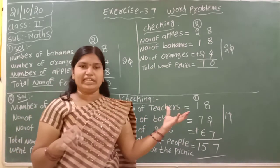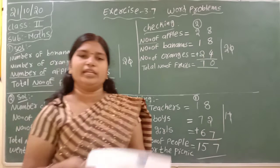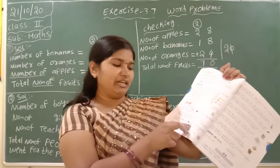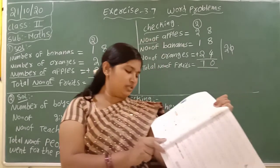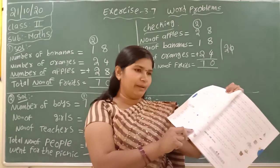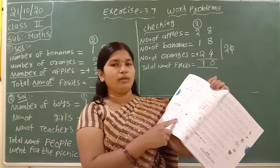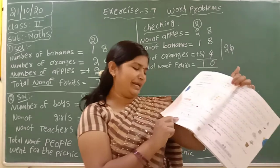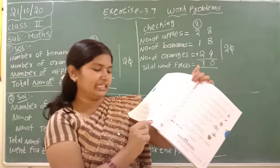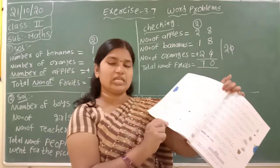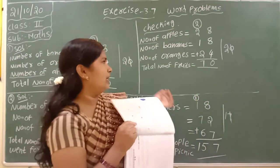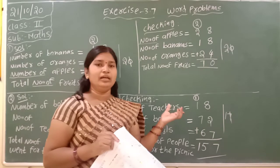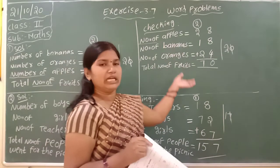In page number 86, there are remaining two questions. Selvam brought 47 green balloons, 36 red balloons and 28 yellow balloons for his sister's birthday party — how many balloons did he buy in all? You have to add all balloons and do the checking. Next: there are 32 red pencils, 25 blue pencils and 36 green pencils — how many pencils are there in all? Write number of each colour and add them, then do the checking.